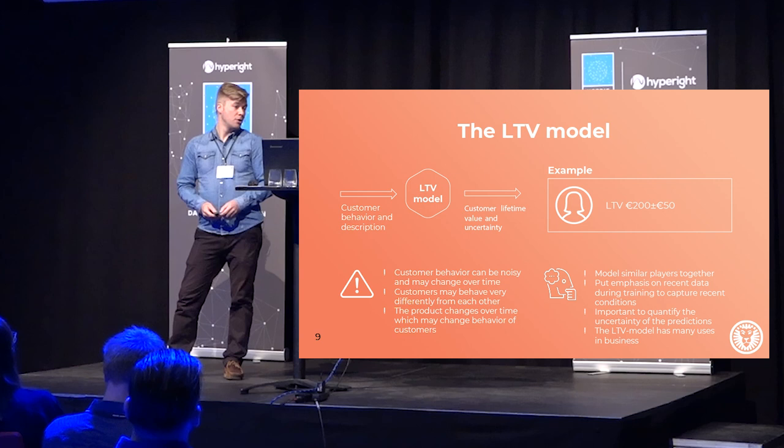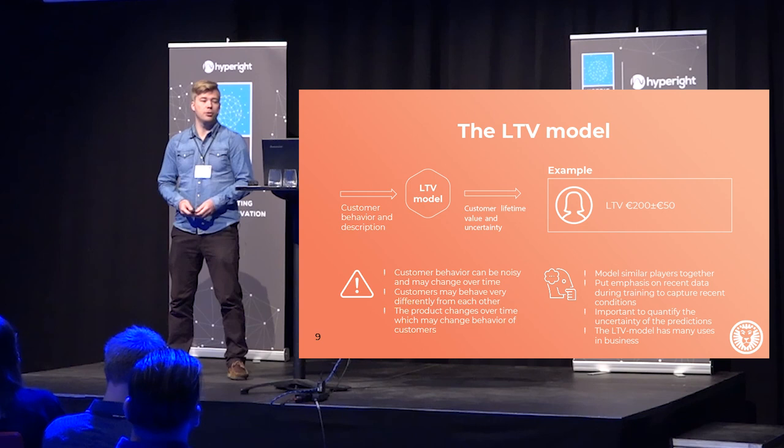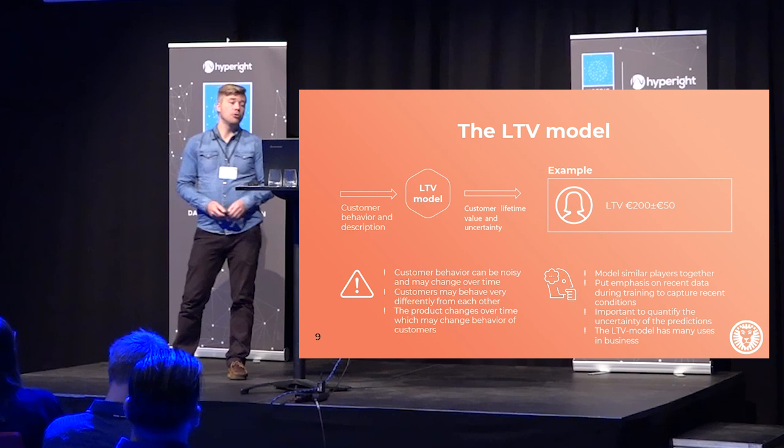More generally, we have our LTV model into which we stick customer behavior and description of customers, and out of this we get customer lifetime value and uncertainty. Here's an example: for this customer the algorithm tells us the lifetime value is 200 plus or minus 50 — we don't really know exactly.